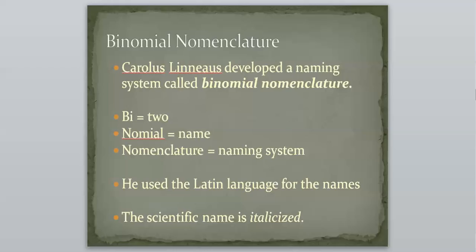And then another rule is whenever we write this scientific name, it would be italicized, and if you're writing it out yourself, it's kind of hard to write in italics, so you would underline that. So Carolus Linnaeus came up with this system.